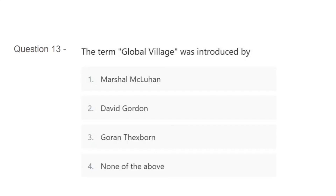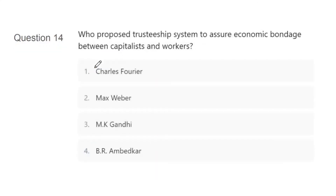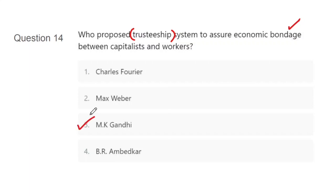Question 13: The term 'global village' was introduced by — Marshall McLuhan, David Gordon, Goran Therborn, or none of the above? The concept of global village has been asked many times in exams, so you should know this. The correct answer is A, that is Marshall McLuhan. Question 14: Who proposed the trusteeship system — trusteeship is the biggest keyword here — to assure economic bondage between capitalists and workers? Options: Charles Fourier, Max Weber, M.K. Gandhi, B.R. Ambedkar. The correct answer is C, that is M.K. Gandhi. Remember, the concept of trusteeship was given to us by Gandhi ji.